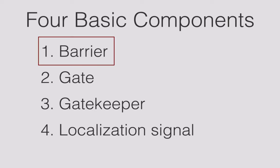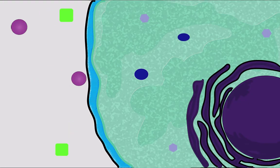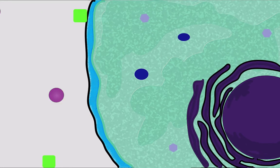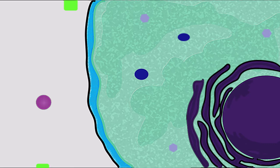The first component is a barrier. All organelles are surrounded by a membrane that is impermeable to large molecules. This allows specialized proteins to be contained within each organelle, but the membrane barrier also makes it impossible to import necessary proteins into the organelle.